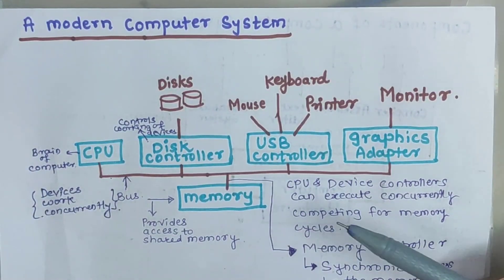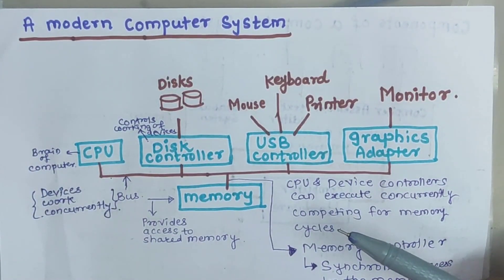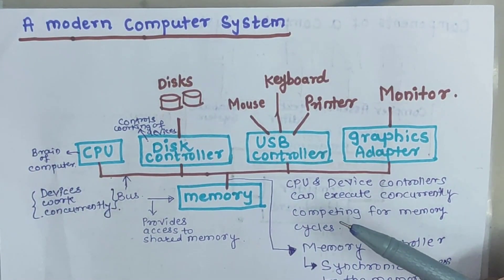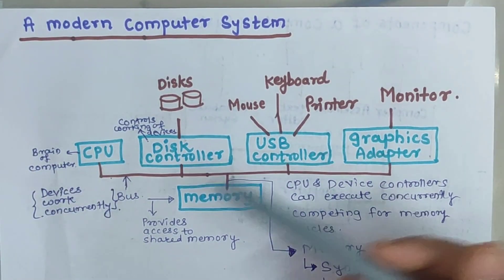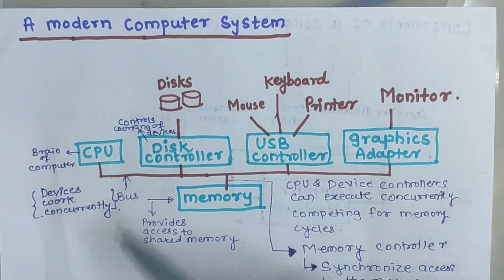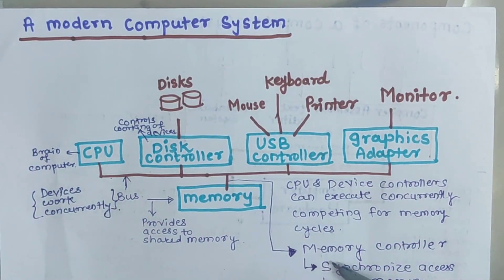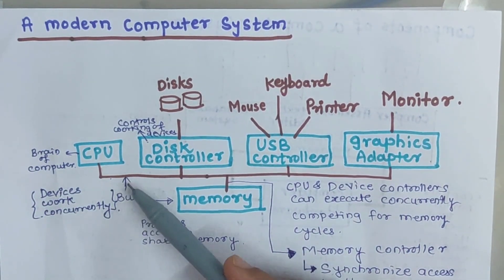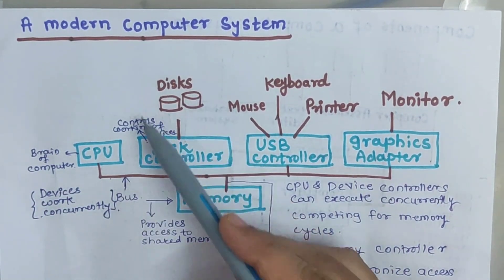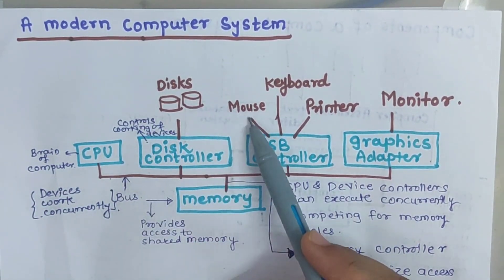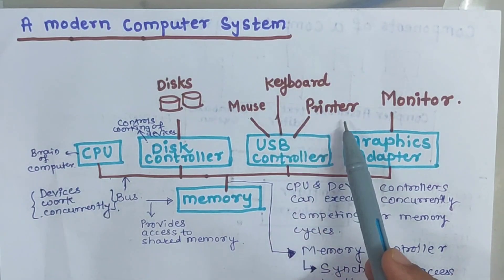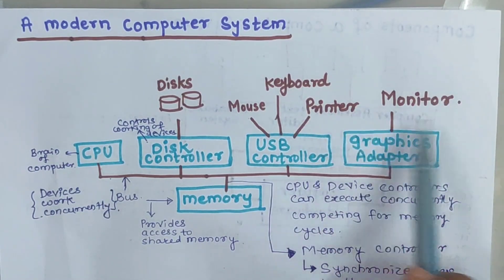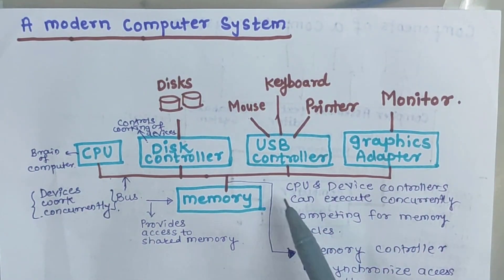Let us see the components of a modern computer system. A modern computer system has various components like CPU, disk, keyboard, mouse, printers, monitor, and memory.